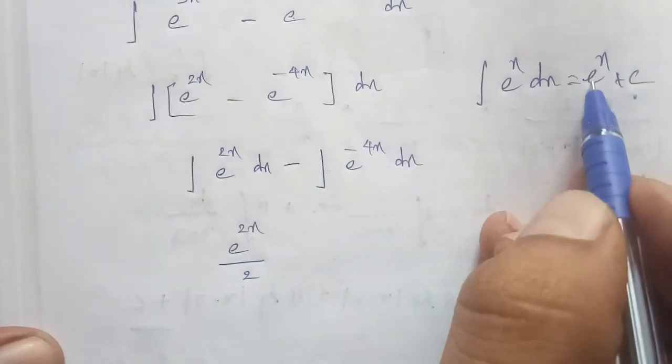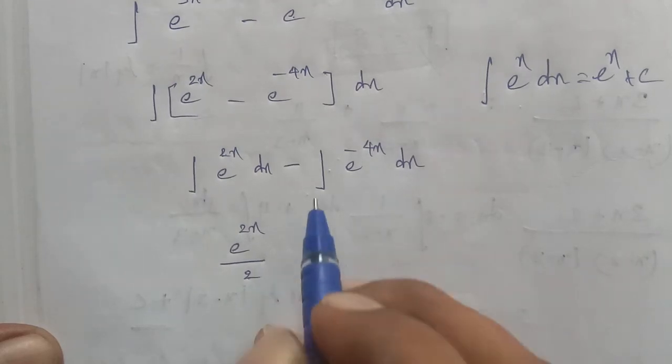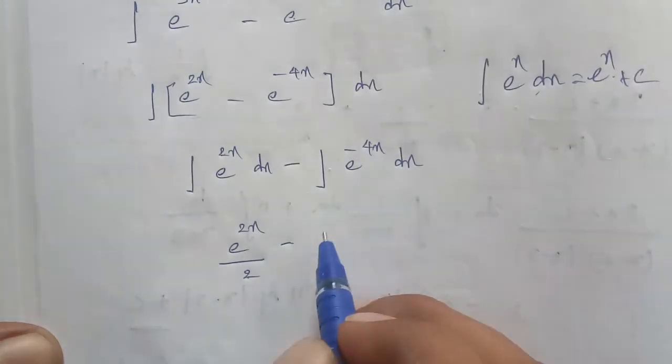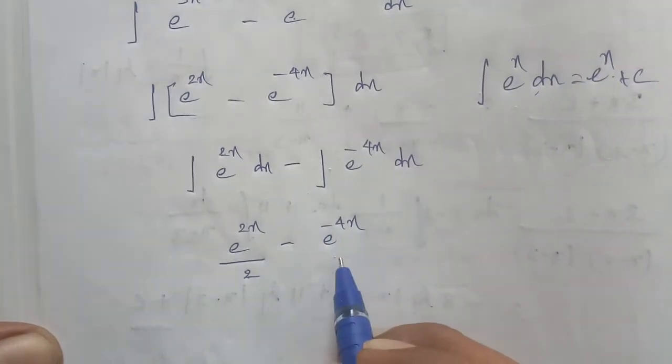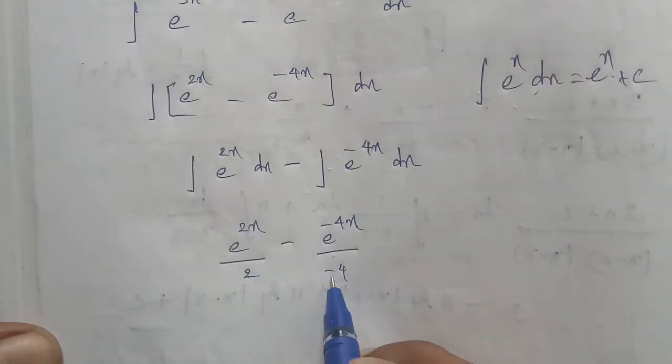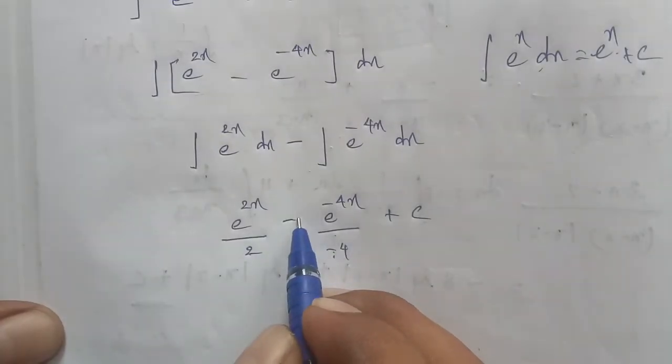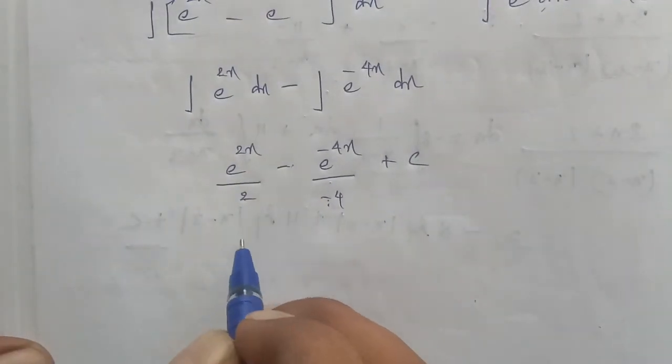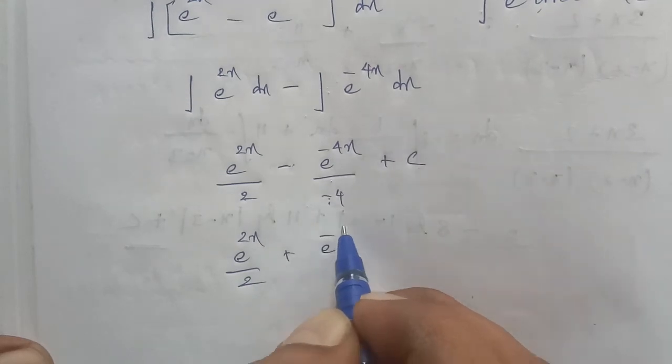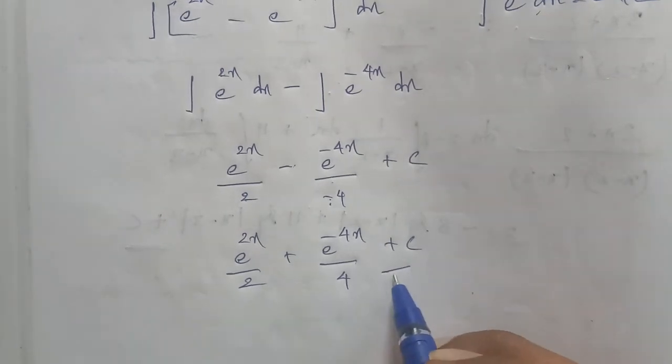And integral of e^(-4x) dx = e^(-4x) / (-4). The minus signs cancel to give plus. Therefore, the answer is e^(2x) / 2 + e^(-4x) / 4 + c. That's your answer. Thank you.